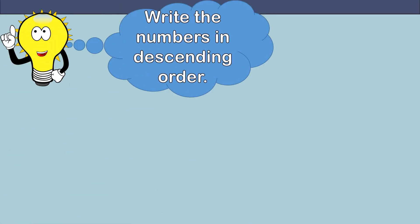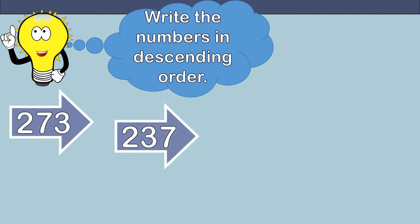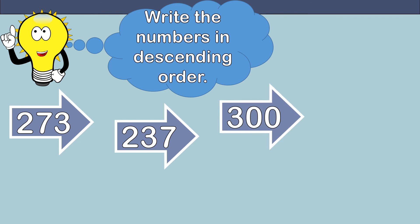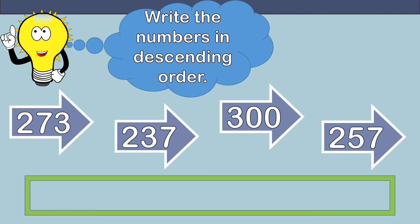We have some more to do. We are going to write these numbers in descending order. I hope you're ready. Read the numbers: 249, 259, 273, 237, 300 — that's a big one — and 257. What number should we write first?